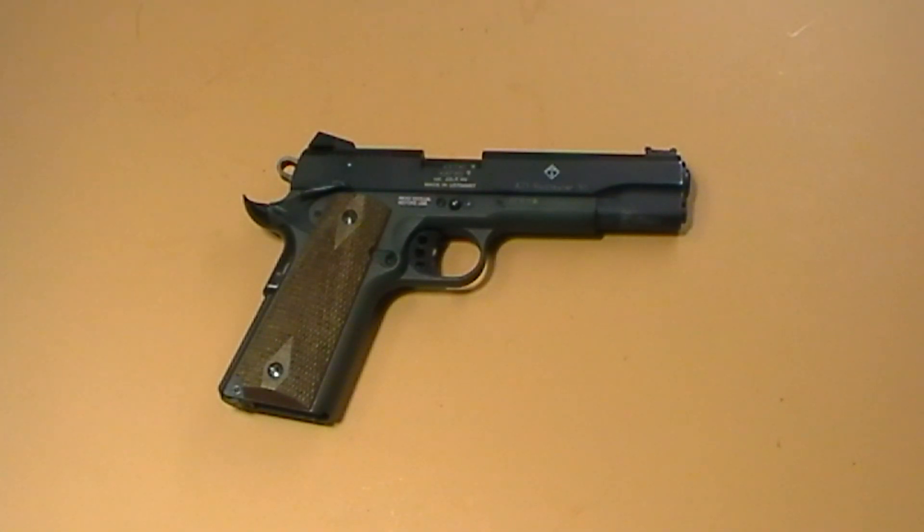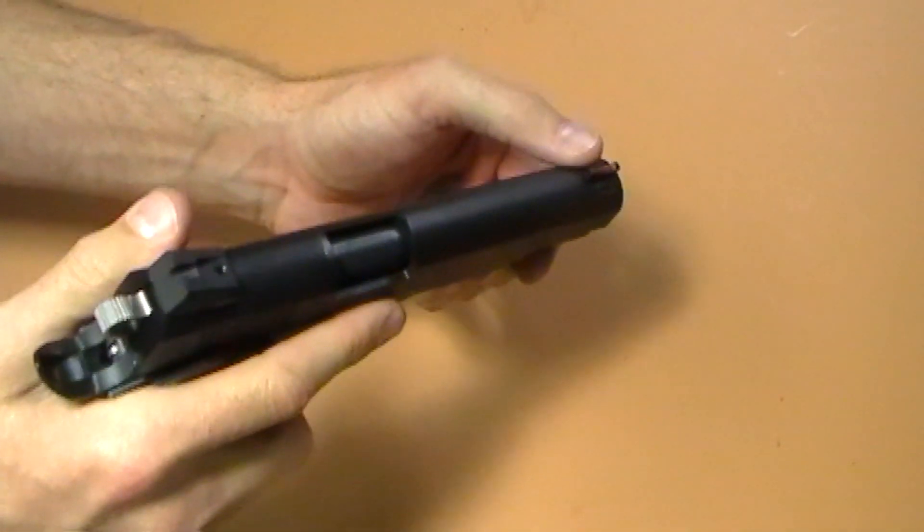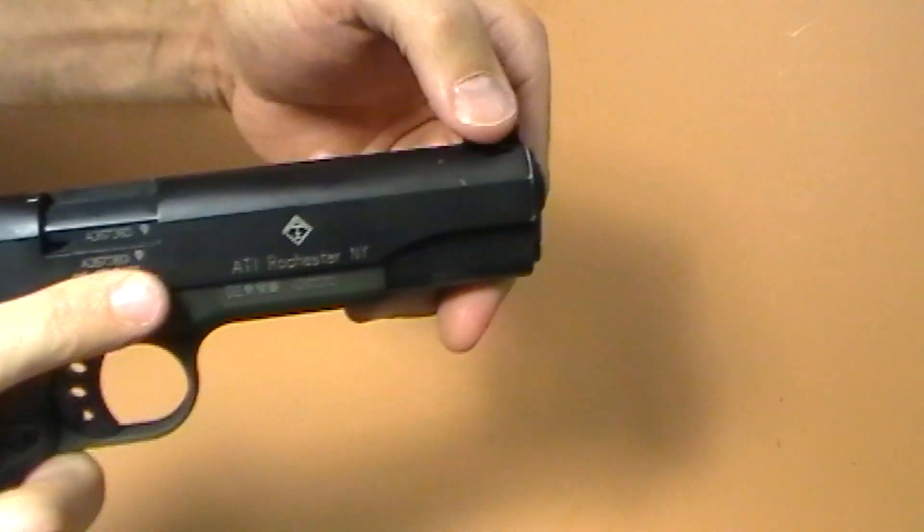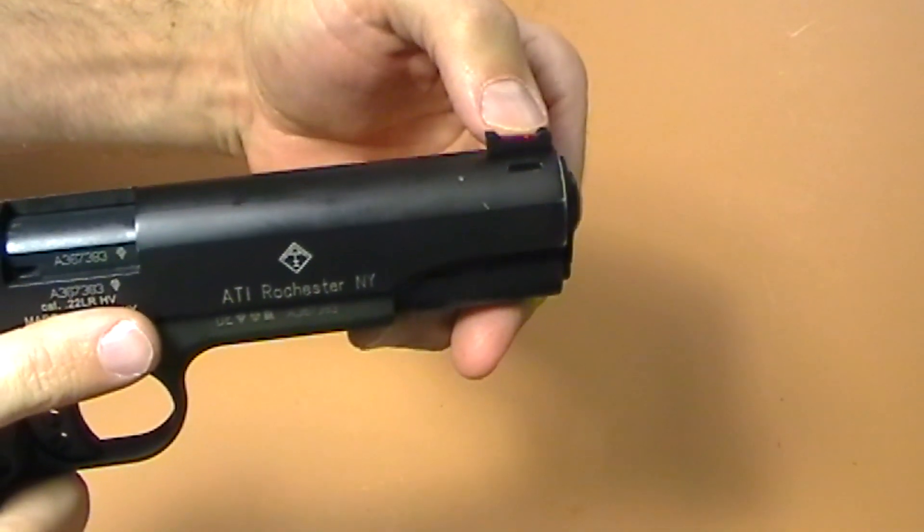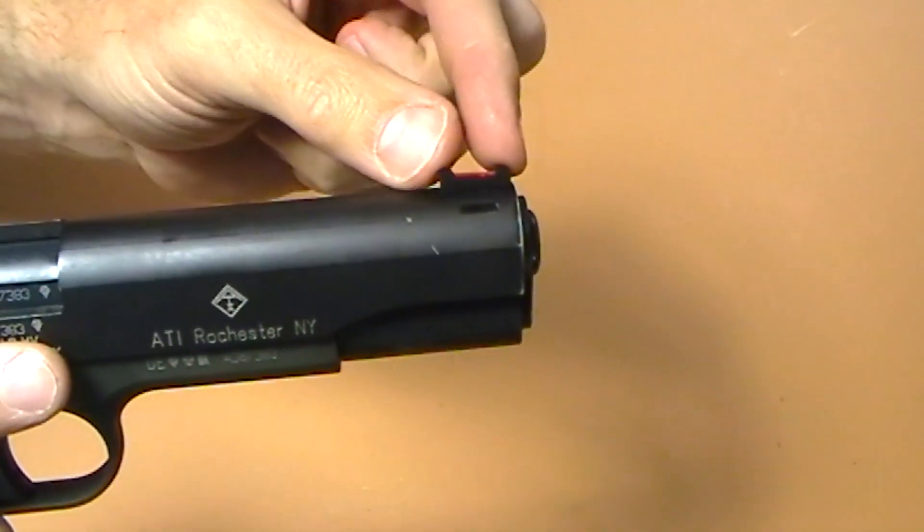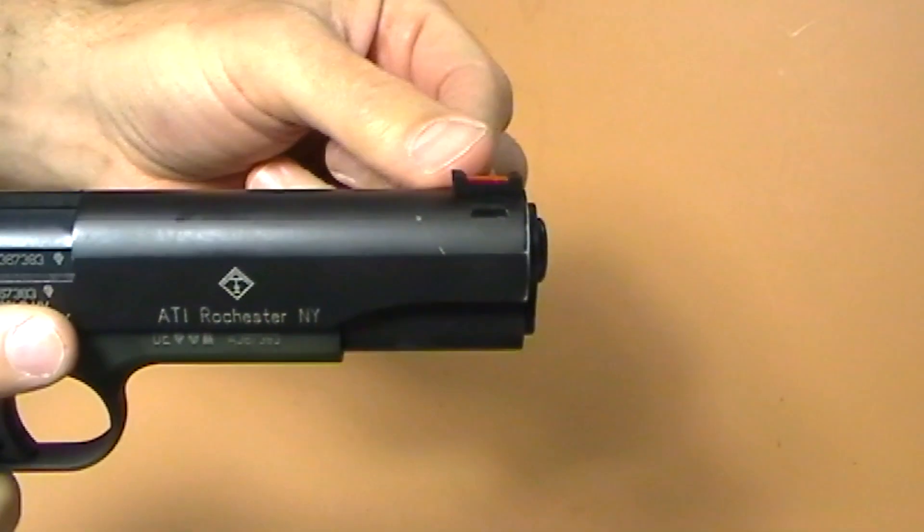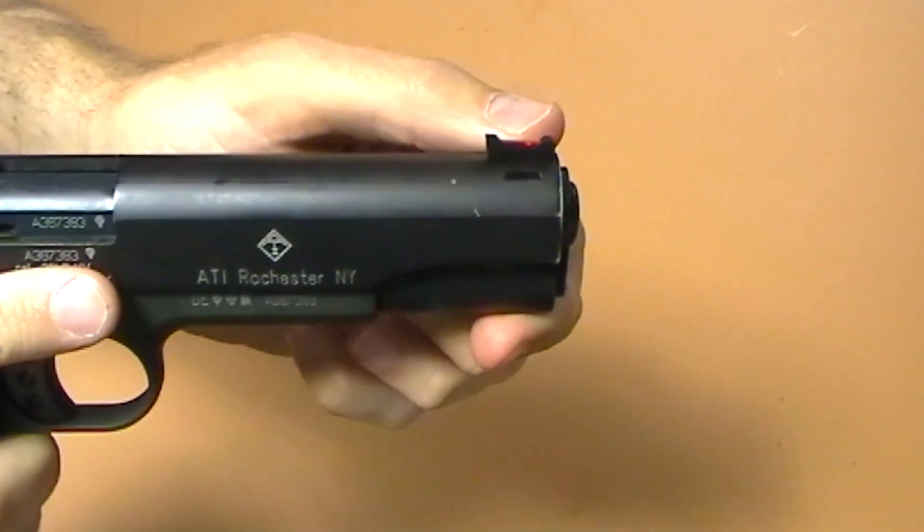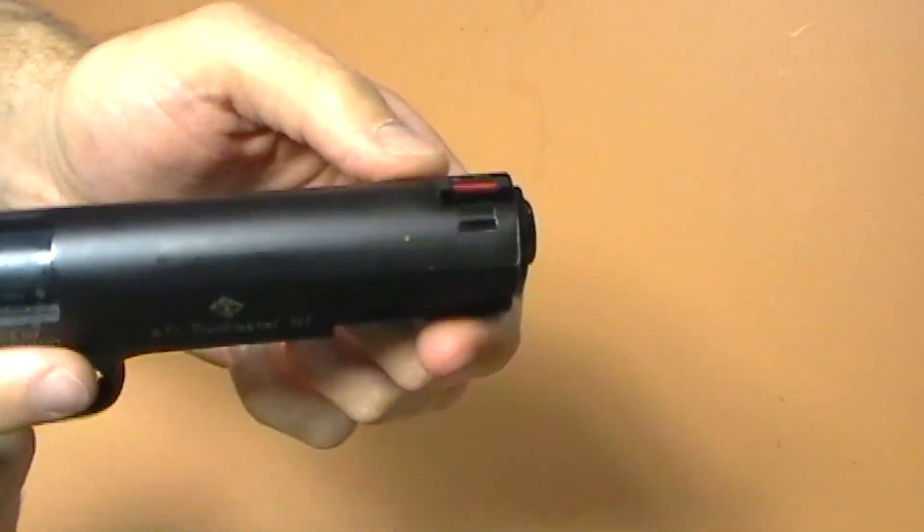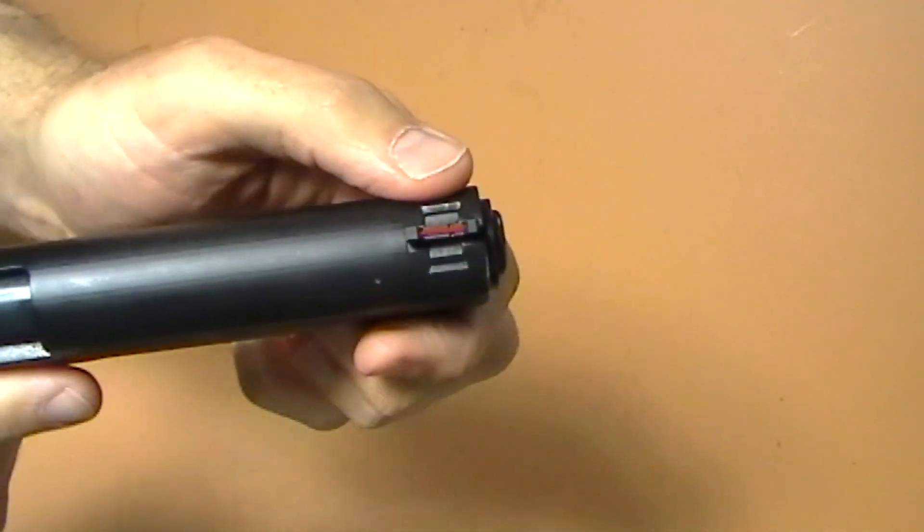I got my GSG back from Dawson Precision from getting a new fiber front sight on here. The dovetail cut was proprietary to the GSG apparently, and so now Dawson has fabricated some fiber front sights that you can drop in yourself. He sells that for about $40 I believe. In the description I'll put the link to the part and I'll also list the part number in case you're interested in doing this yourself.